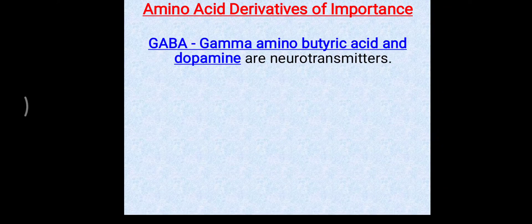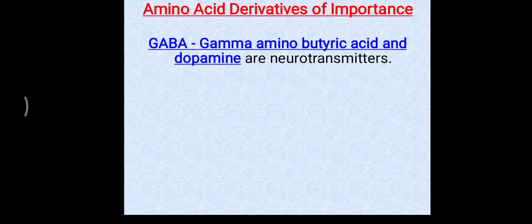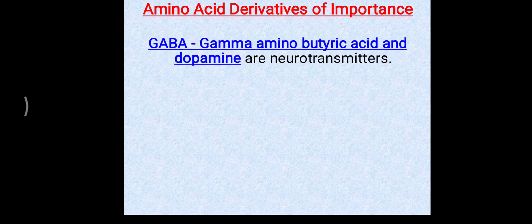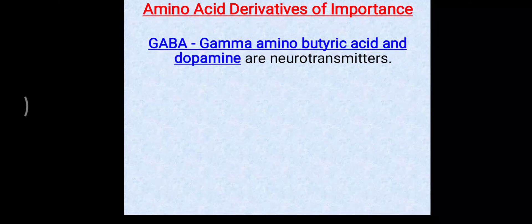GABA, that is gamma-amino butyric acid, is derived from glutamic acid or glutamate. From glutamate, a decarboxylation reaction occurs and GABA is generated. Vitamin B6 is needed for this reaction. GABA and dopamine are important neurotransmitters. GABA is derived from glutamate and dopamine is derived from tyrosine.